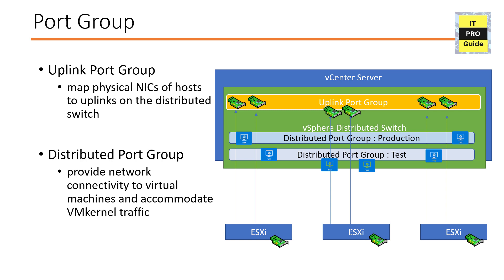The second abstraction is the distributed port group. What we learned about port groups in the vSphere Standard Switch is the same as a distributed port group — the only difference is that it is distributed across all ESXi hosts. It is used for network connectivity to virtual machines and to accommodate VMkernel traffic. You can configure NIC teaming, failover, load balancing, VLAN, security, traffic shaping, and other policies on a distributed port group. The configuration set on a distributed port group in vCenter is automatically propagated to all host proxy switches.